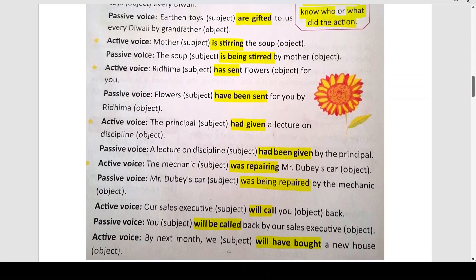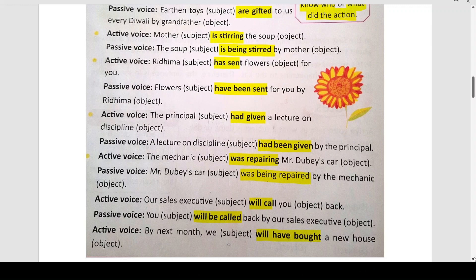Mother is stirring the soup. Mother हमारी subject है, वो stirring का action कर रही है, soup हमारा object है। क्योंकि हमारा subject mother action कर रही है, ये sentence हमारा active voice में है। इसी sentence को passive voice में करने के लिए, हमारा जो object है वो बन जाता है हमारा passive voice का subject: the soup is being stirred by mother. आप tense देख रहे हैं कैसे change हो रहा है? 'Is stirring' बन जाता है 'is being stirred'. जब हम interchange करते हैं subject and object को, तो verb का form भी change होता है।